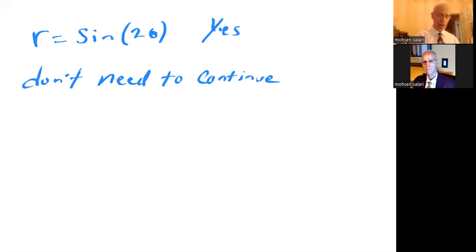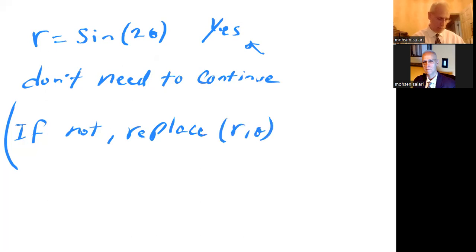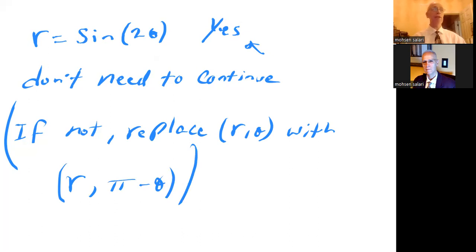Just in case the answer wasn't yes — if not, you would then replace (r, theta) with (r, pi minus theta), simplify, and see if you get a yes or no. If at both steps you got a no, then there's no symmetry. But we don't need that for this problem.